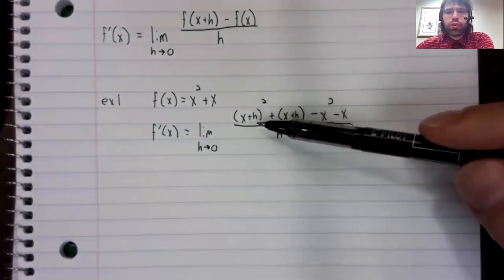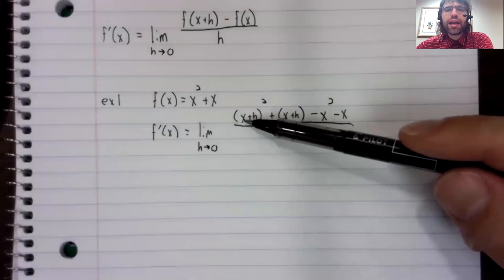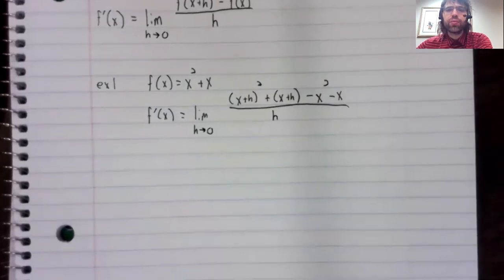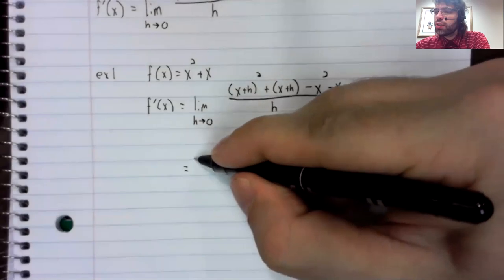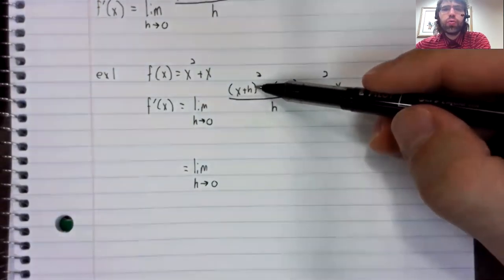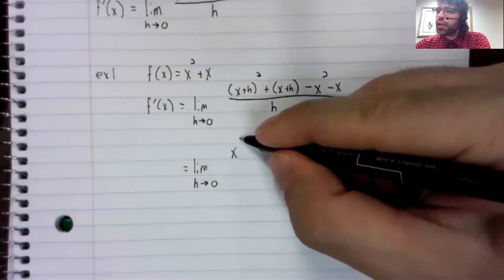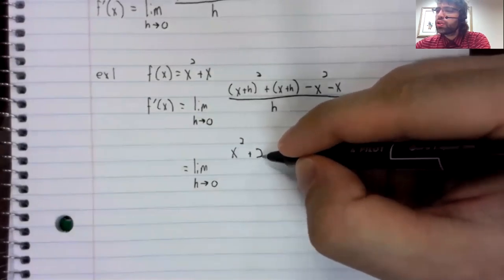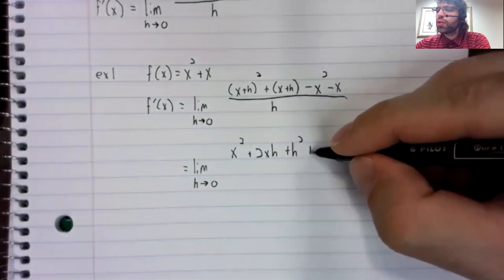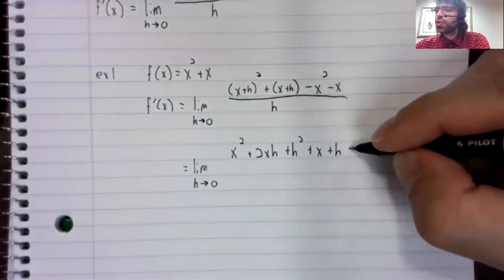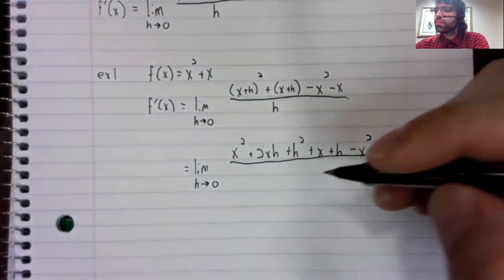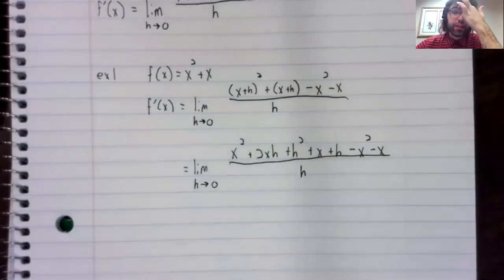Well, what I see is a square here, and that will give us, for example, an x squared, which would cancel with this negative x squared. So I think what I'm going to do is FOIL this out. x squared plus 2xh plus h squared plus x plus h minus x squared minus x. All divided by h.